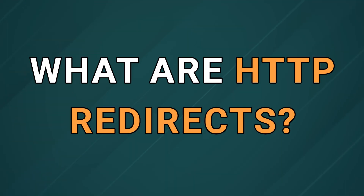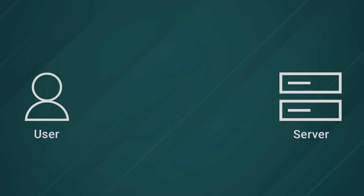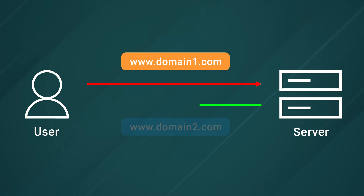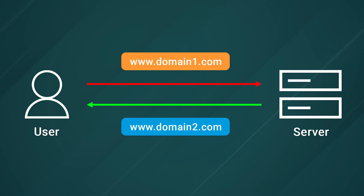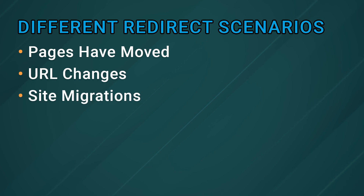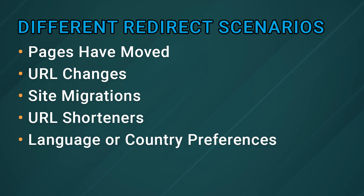First off, we should understand what HTTP redirects are. Redirects allow an HTTP server to respond with instructions for the browser that the page it's trying to reach is no longer available, and that it should go to a new page instead. These instructions can tell the browser whether the redirect is temporary or permanent. Redirects have been around for a long time and are useful in scenarios such as pages that have moved or no longer exist, URL changes for SEO purposes, whole site migrations from one domain to another, building a URL shortener, managing different language or country preferences, or managing different devices.